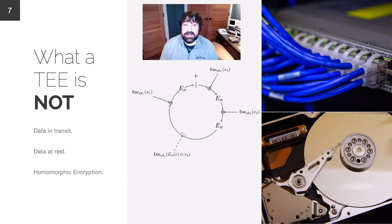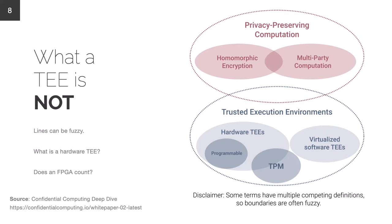Let's discuss what a TEE is not, or what we won't cover here. Data in transit — things like HTTPS — won't be discussed. Data at rest, such as full disk encryption, is not considered a TEE. Homomorphic encryption, operating on encrypted instructions and data, is a fascinating topic but not covered here. We'll also restrain ourselves to hardware TEEs. Something running on an FPGA would not qualify as a hardware TEE since it remains mutable software.